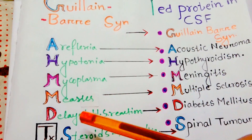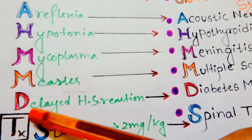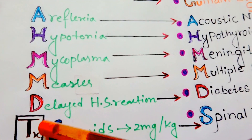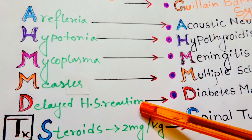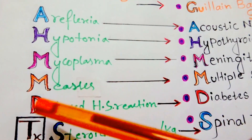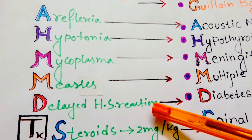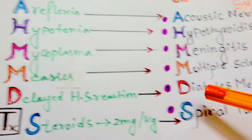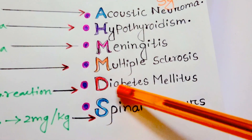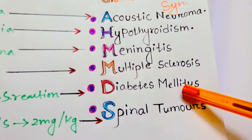In the pathogenesis of Guillain-Barré syndrome, a delayed type of hypersensitivity reaction is seen. By 'D', it stands for delayed type of hypersensitivity reaction, and by 'D' it also represents diabetes mellitus as another cause of high CSF protein.